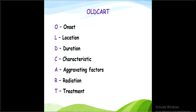The OLD CART format: O is for onset — when did the pain occur; L is for location — where it occurred; D is for duration — how long it lasted; C is for characteristic — the character of the pain, such as dull, itching, or burning; A is for aggravating factors — what worsens the pain; R is for radiation — where the pain spread; and T is for treatment — what treatment was given.